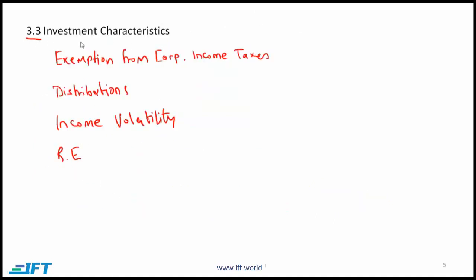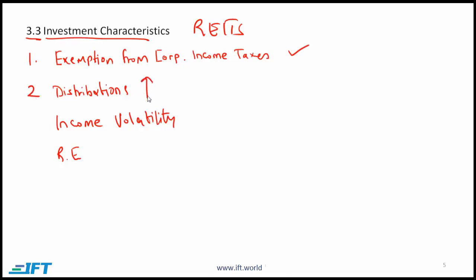Section 3.3 is very important. It first talks about some high-level investment characteristics of REITs. One basic point is that REITs get exemption from corporate income taxes, which is a good thing. The distributions to shareholders are relatively high. In fact, for this exemption to kick in, there are generally requirements that the income generated from the properties is distributed to the shareholders.